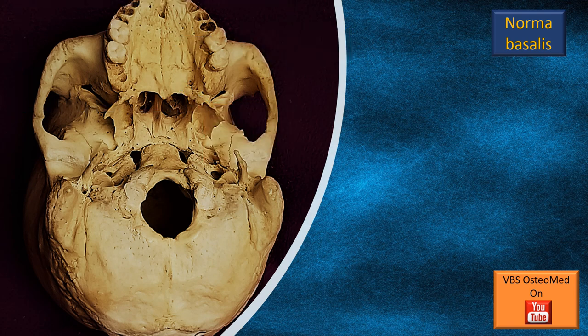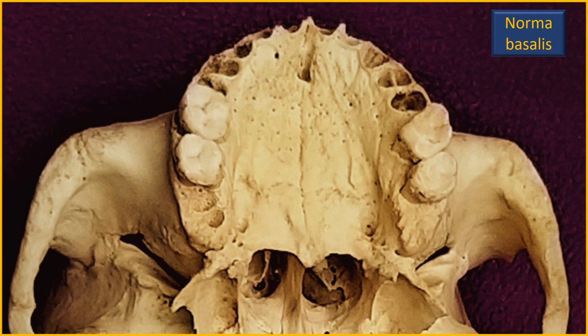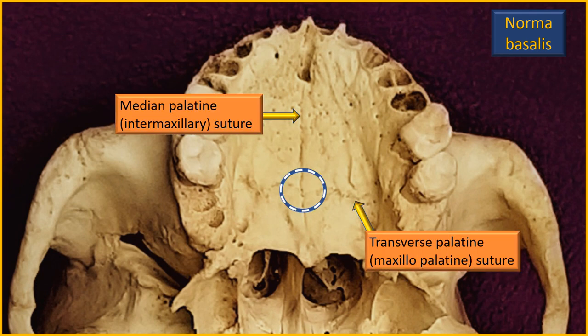That is the area we are currently discussing — let us zoom in. This hard palate has two components: a maxillary component and a palatine component. The two palatine processes of the maxilla join in the midline sagittal plane to form an intermaxillary suture, also called the median palatine suture.